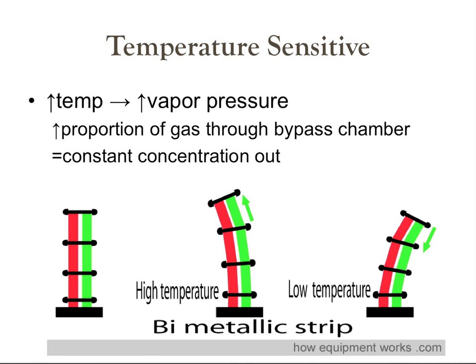When vapor is generated, it takes heat from the liquid and its surroundings, so that heat energy is lost. When heat energy is lost, the temperature of the vaporizer and liquid decreases, which decreases the vapor pressure of the anesthetic and decreases vaporizer output unless a compensatory mechanism occurs. One mechanism is bimetallic strips — each strip has a different coefficient of expansion. As temperature rises, one surface expands more than the other, and the strip is attached to a flap that diverts gas through either the bypass or the vaporizing chamber to maintain a constant concentration output.